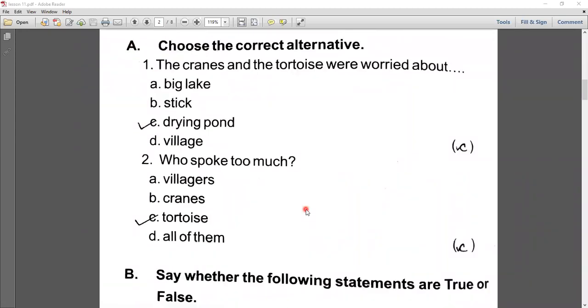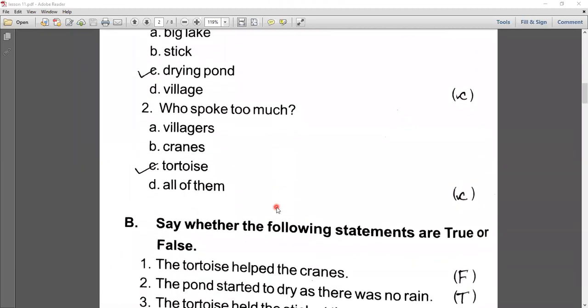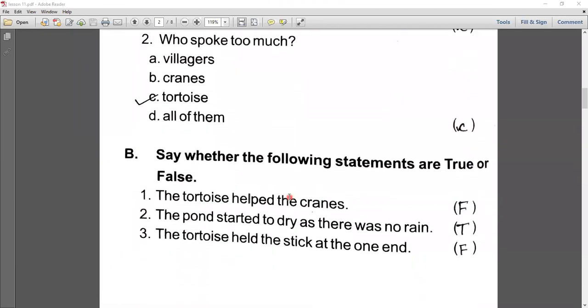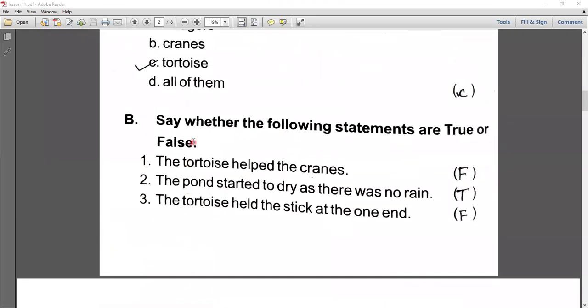Number second, who spoke too much? Yes, tortoise. The answer is tortoise. Now B: say whether the following statements are true or false. Number one, the tortoise helped the cranes. Yes, it is false. The tortoise ne cranes ki help nahi ki, cranes ne tortoise ki help ki.